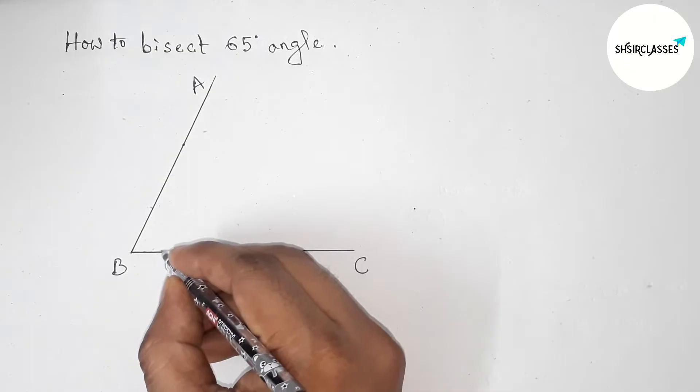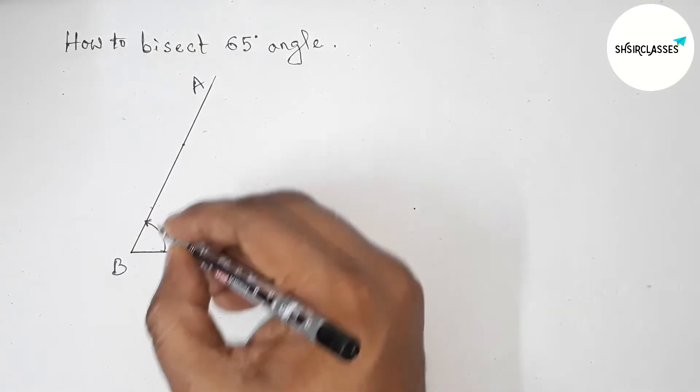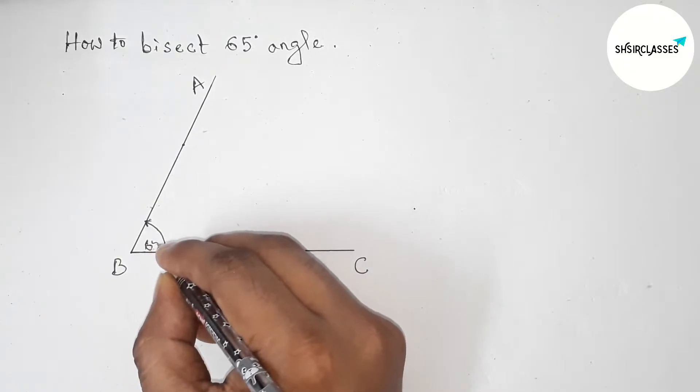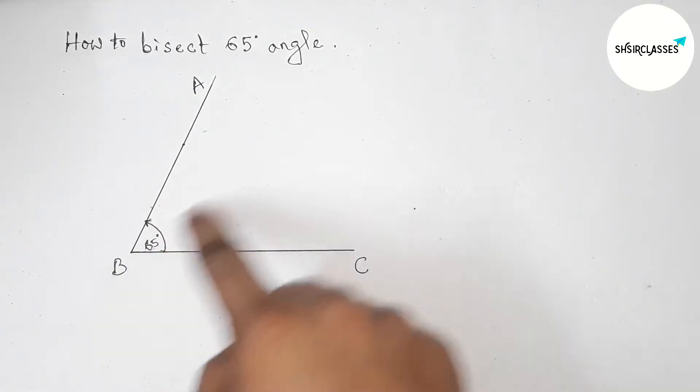Angle ABC is a 65-degree angle. Now we have to bisect angle ABC with the help of a compass.